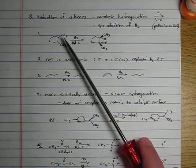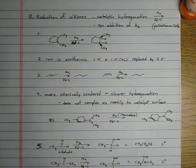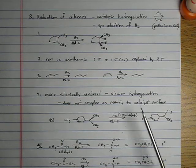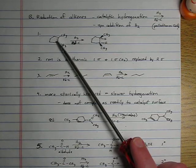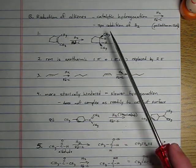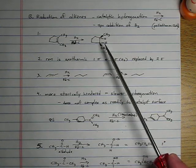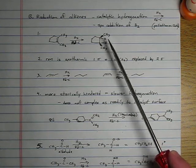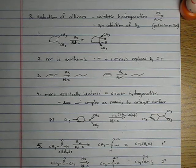What this means, for example, is if we have this 1,2-dimethylcyclohexene, if we add H2 palladium on carbon, the H2 will reduce the double bond to a single bond, adding hydrogens. And we will only get this beast right here, with the CH3s on the same side. The H2s must come in the same side, syn addition.